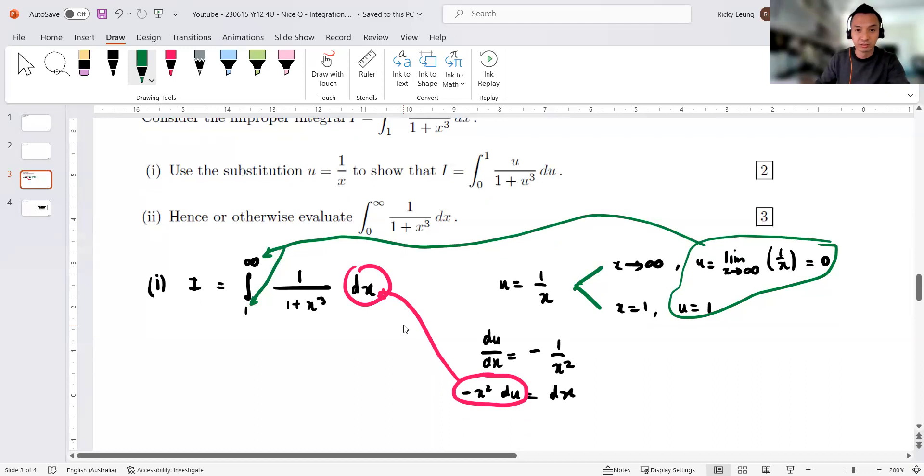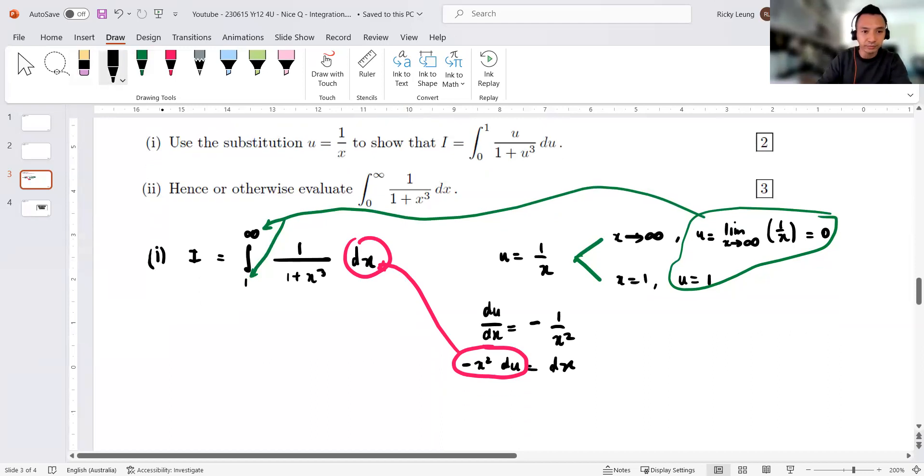And then I just plug these two new limits into here. Pretty sweet. And then I go about my business. So let's see where this takes me. It becomes like new limits of zero and one, and then it's minus x squared on 1 plus x cubed du.